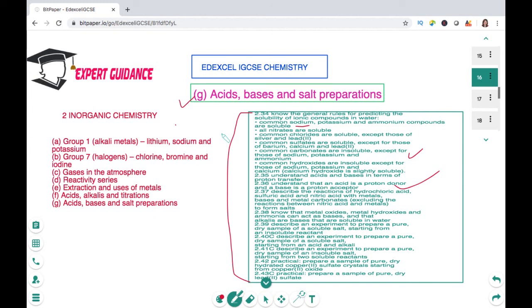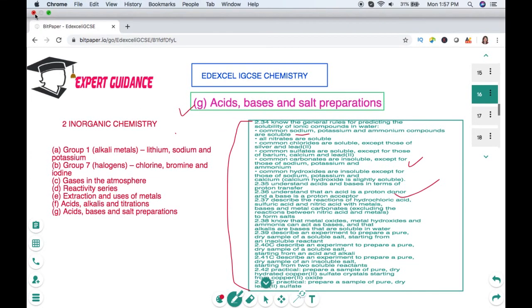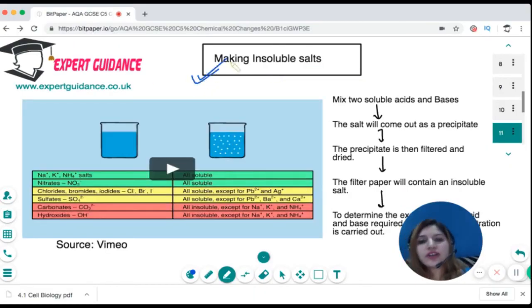So let's begin. Now how do you make the insoluble salts? For the insolubility you need to remember these solubility rules: all the sodium, potassium, ammonium salts are soluble; all nitrates are soluble; all chloride, bromides and iodides are soluble except lead and silver; all the sulfates are soluble except lead, barium and calcium sulfate; all carbonates and hydroxides are insoluble except the sodium, potassium, ammonium carbonate and hydroxides.